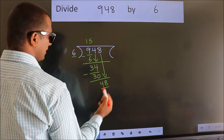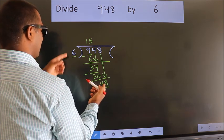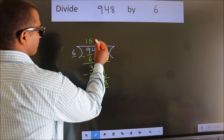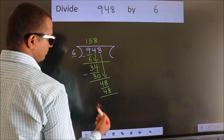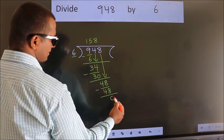So, 48. When do we get 48 in 6 table? 6 8's 48. Now, we subtract. We get 0.